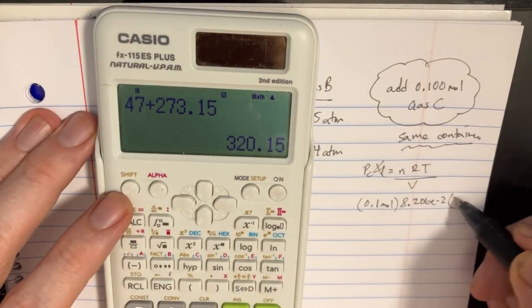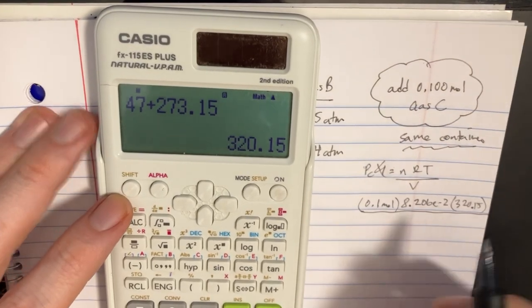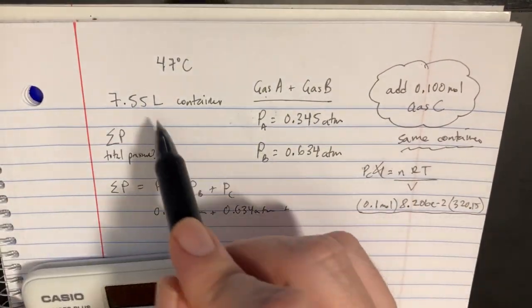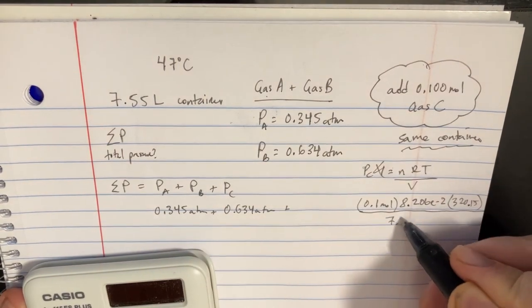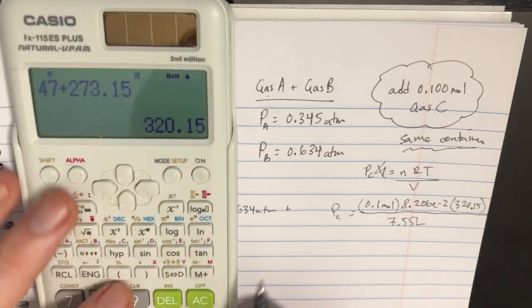And then that would give us 320.15. Divide that by the volume. It's the same container so we're going to use 7.55 liters. And so that should give us this answer.